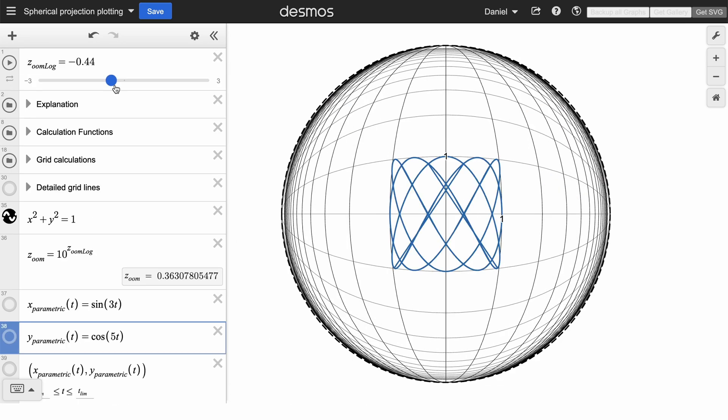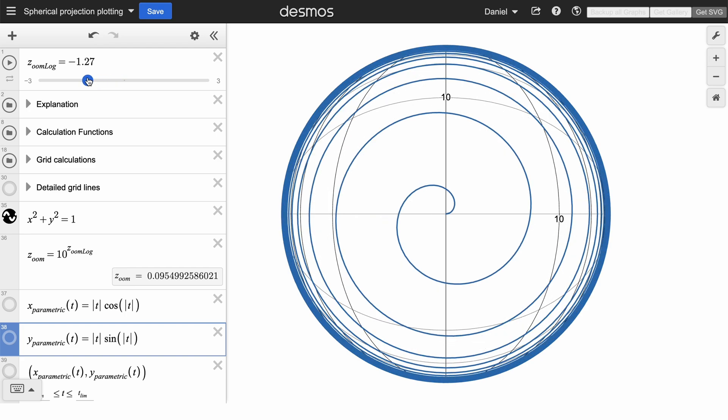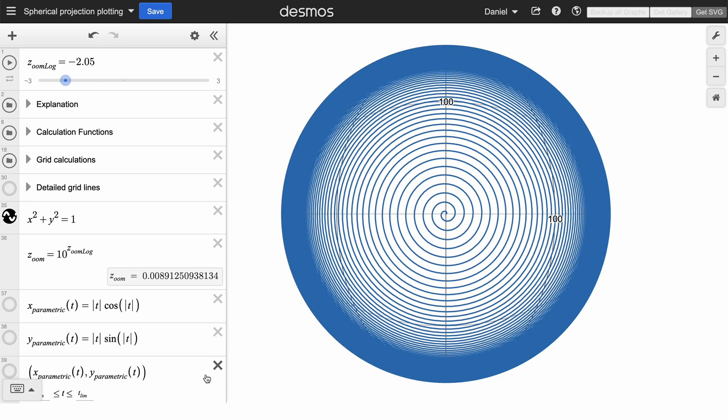Here's a hyperbola. Here are some combinations of sine and cosine. Here's an outward spiral. And you can type in whatever other parametric equation you would like.